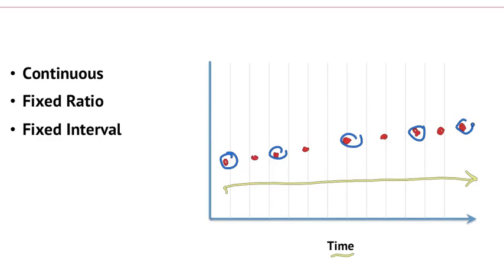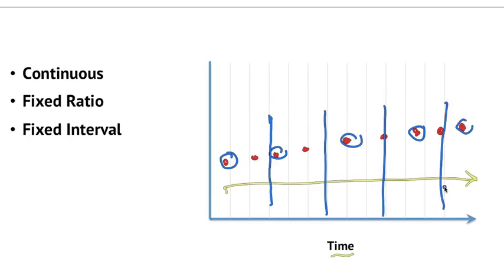The third category is a fixed interval reward. Here the reward is fixed not based on the amount the person engaged in the activity, but based on time. So if the fixed interval says the reward comes every three units of time, one-two-three, the reward comes right there, then three units later, three units after that, and so on. Sometimes the reward hits right when the user was engaging in the action, but other times it didn't — the reward was given when the action was much earlier. It's based on time, not on what the user does, but it's still a regular pattern.